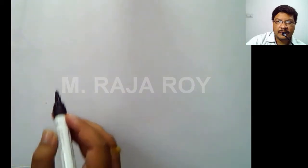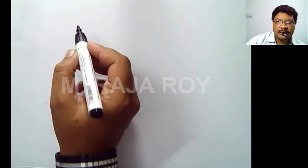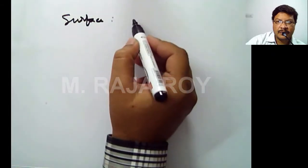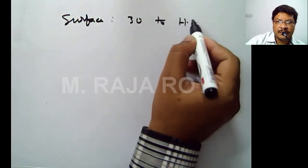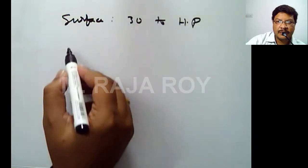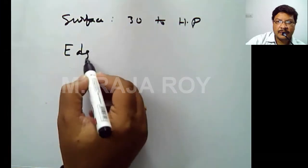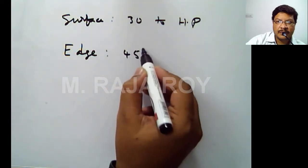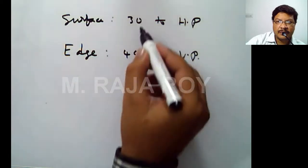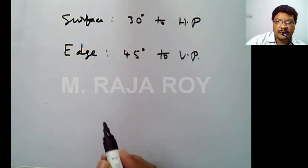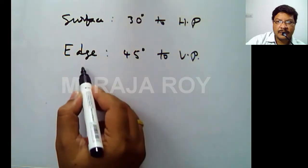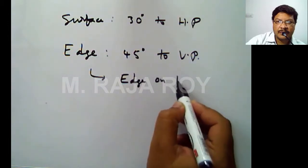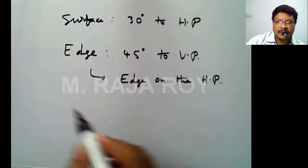After reading the problem, you extract the information about the surface — surface is 30 degrees to HP. This is the given data. Next, you extract the information about the edge — edge is making 45 degrees to VP. Surface is making 30 degrees to HP. The next information given about the edge is that the edge is on the HP.